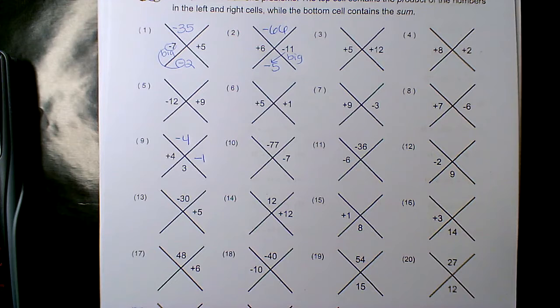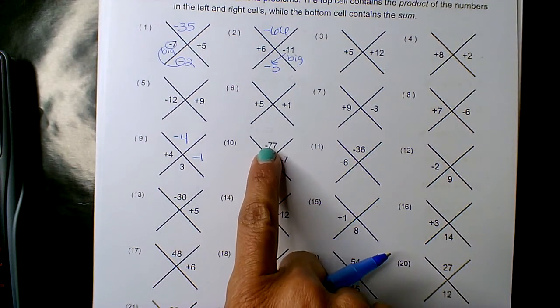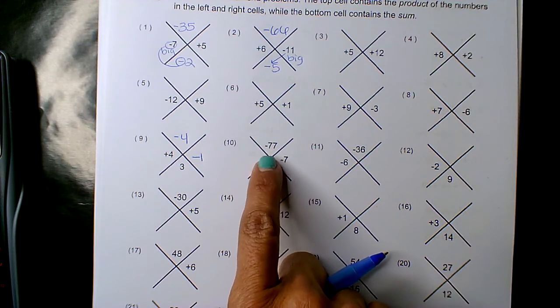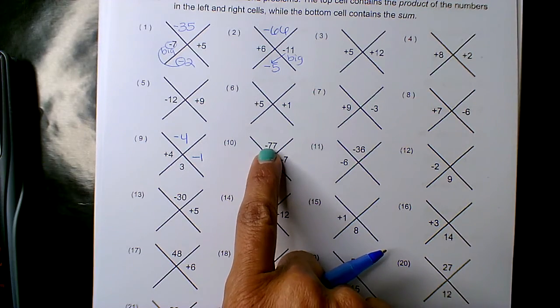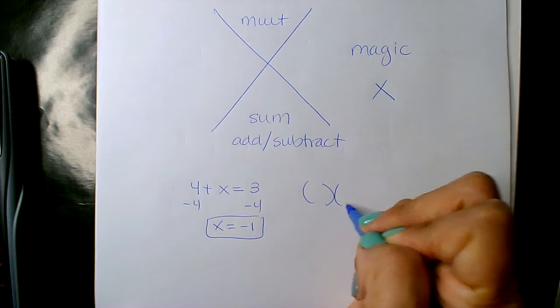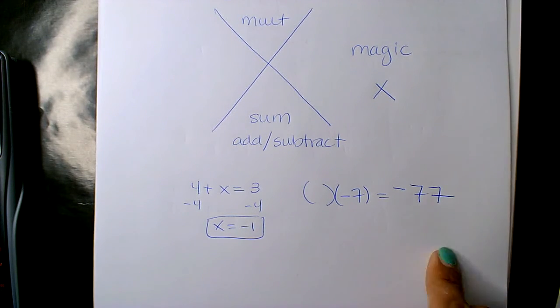Okay, negative 77 is the product. So these two numbers, when multiplied, give me the product negative 77. So what number times negative 7 gives me negative 77?